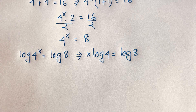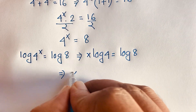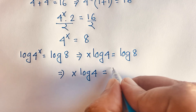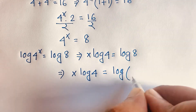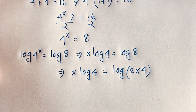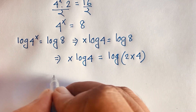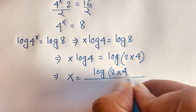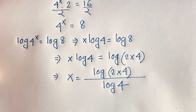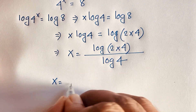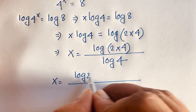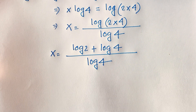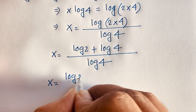So we have x log 4 equals log 8. Now log 8 can be written as log of (2 times 4). If I divide both sides by log 4, we find x is equal to log(2 times 4) over log 4. By the log addition rule, log(2 × 4) equals log 2 plus log 4, so x equals (log 2 plus log 4) over log 4.